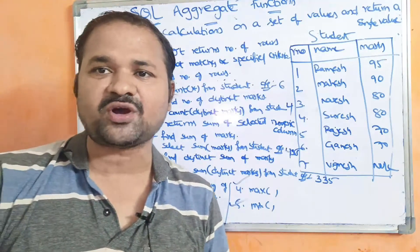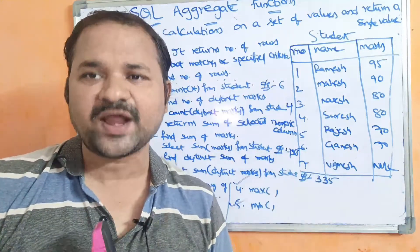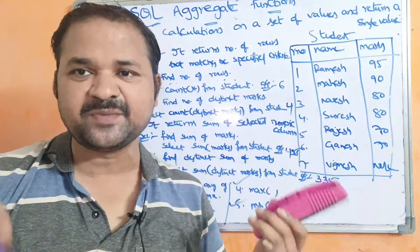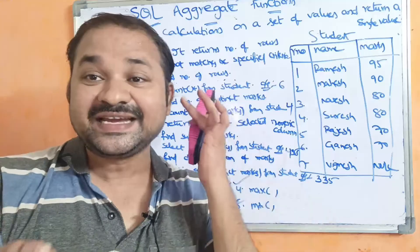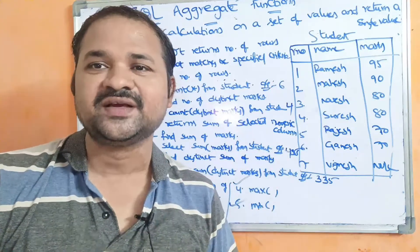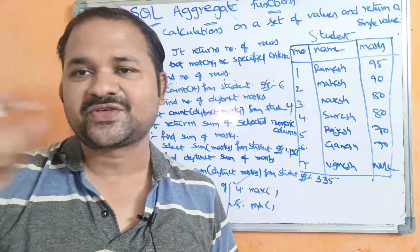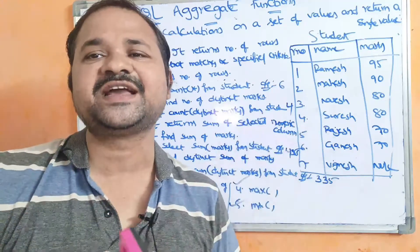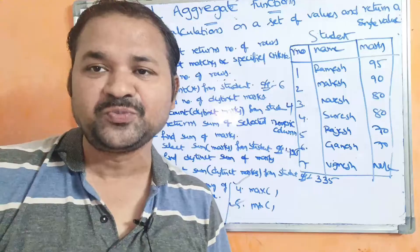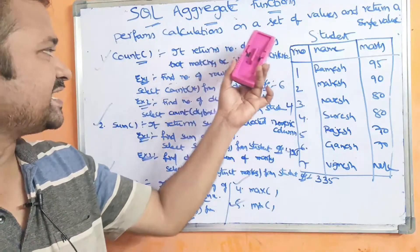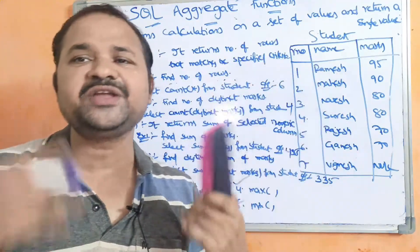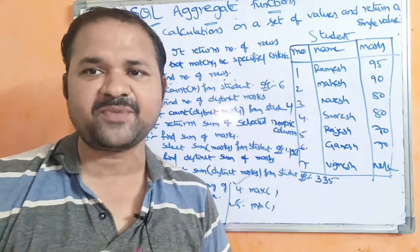Now let us discuss all these aggregate functions one by one. The first function is the count function. Count means it returns the count — the number of rows affected by that query. It returns the number of records, rows, or tuples that match the specified criteria.